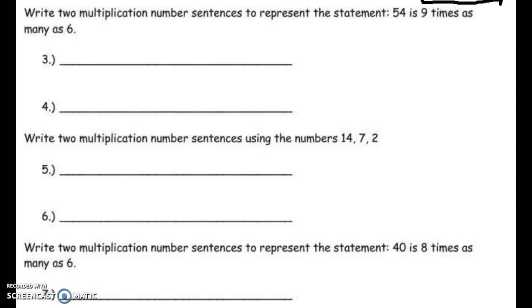Let's try it without the fact families this time. I'm creating two multiplication number sentences to represent the statement: 54 is 9 times as many as 6. Well, what I told the students to recognize is that in math, you can take words and create math operations or equation signs or numbers. 54 is. Whenever I see that word is, I immediately think equal. So it is equal to 9, and when I see that times sign, I'm immediately going to write my multiplication symbol and then my 6.